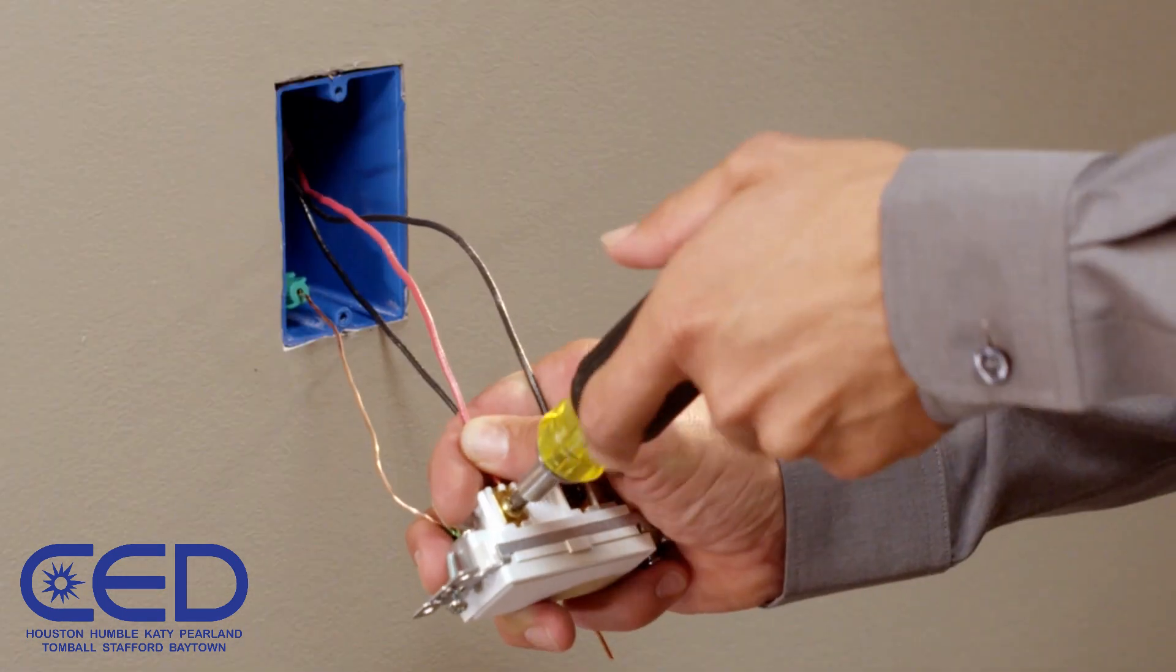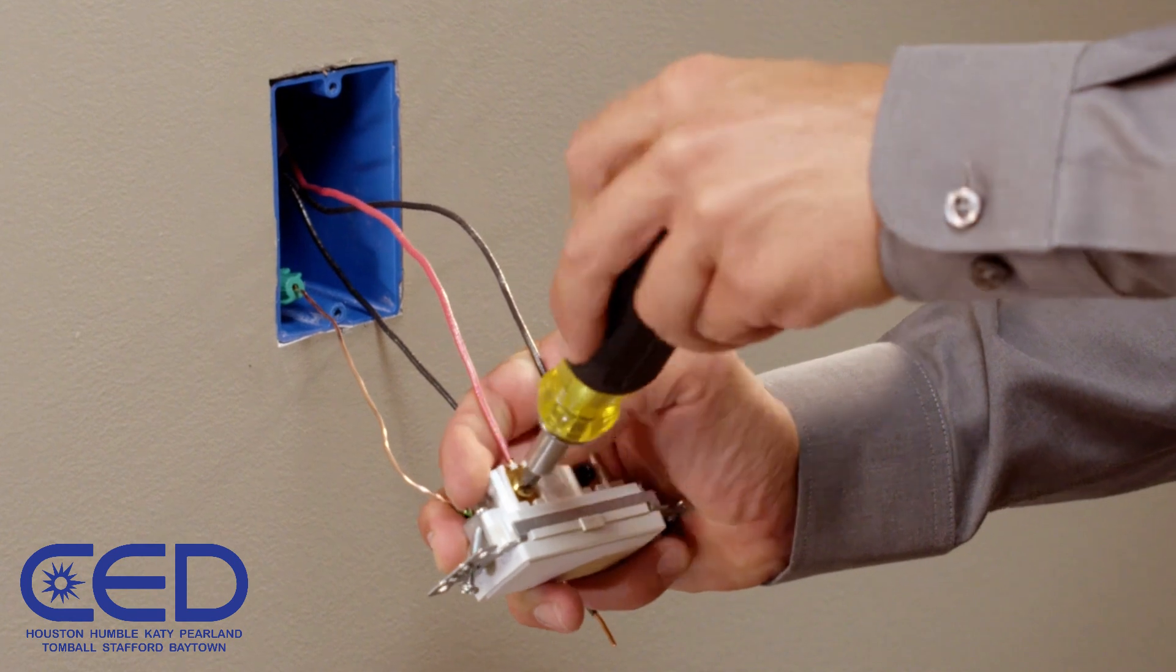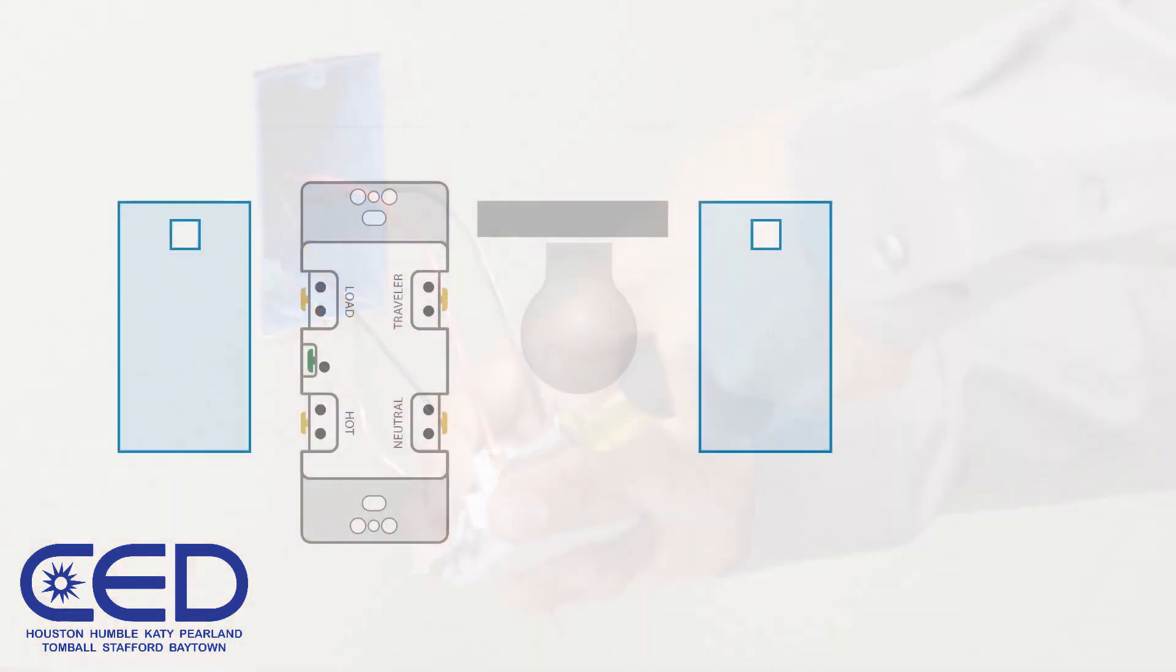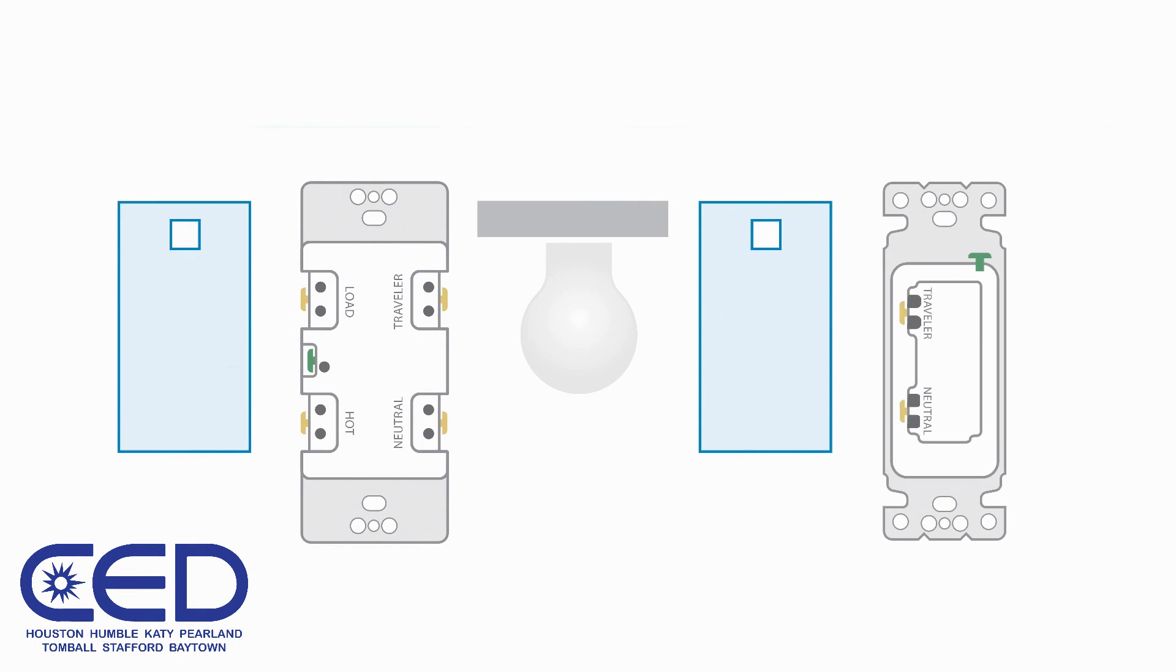If you're wiring the switch or dimmer in a three-way circuit, connect the red traveler wire to the upper right terminal on the device. You'll now need to add a single pole switch on the far end of the circuit. Follow the wiring identification as shown in this diagram.